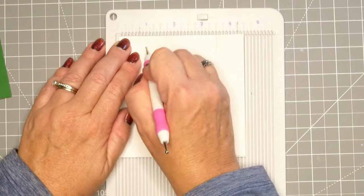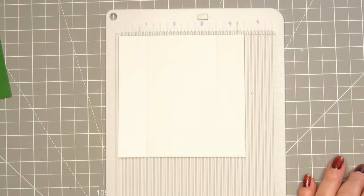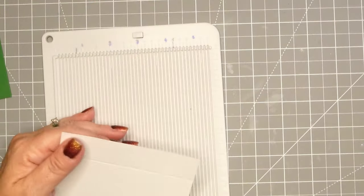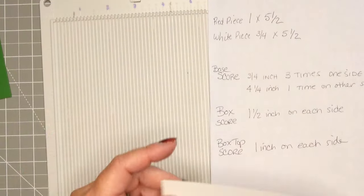Then for the white piece it's going to be 1 inch on all sides. Hard to see in this lighting. Sorry about that, but it's 1 inch and that's going to be the top.